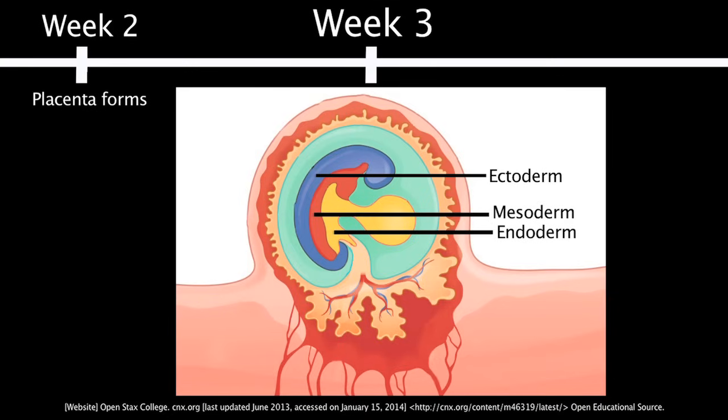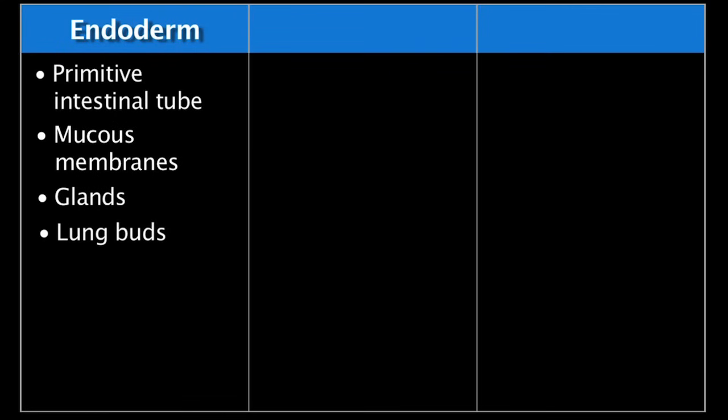Specific body systems will develop from each layer. The endoderm, or inner layer, gives rise to the primitive intestinal tube, mucous membranes, glands, lung buds, urinary tract, and yolk sac.